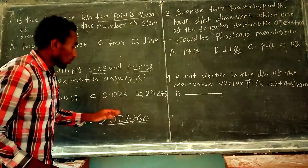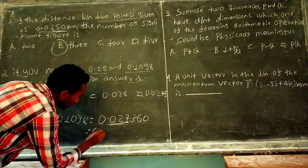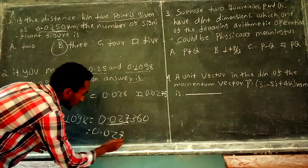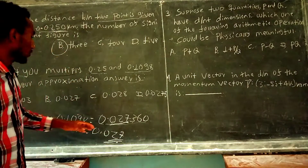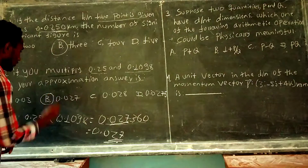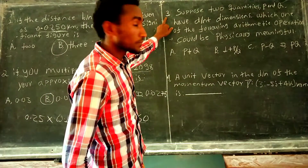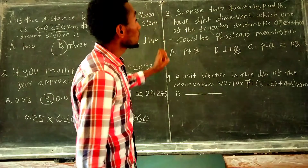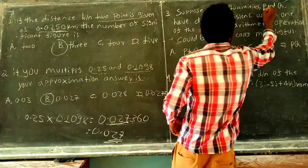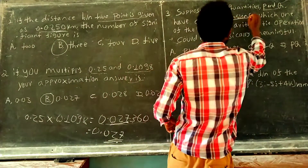The figure is 0.0279. This is the approximation. This is the same as the figure — the figure is 0.0279.